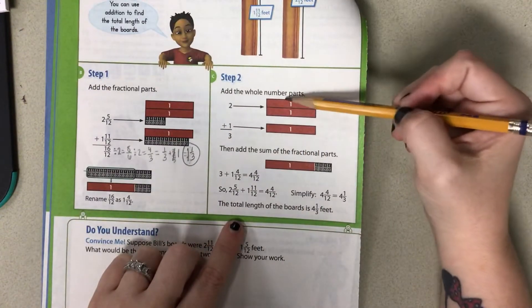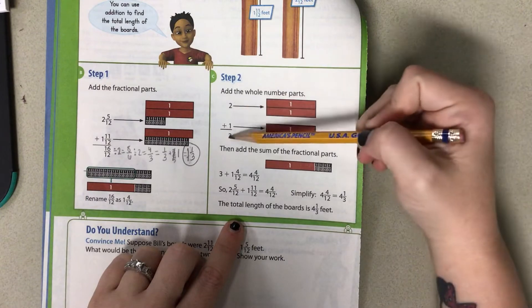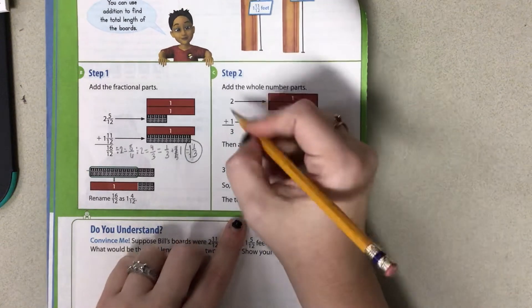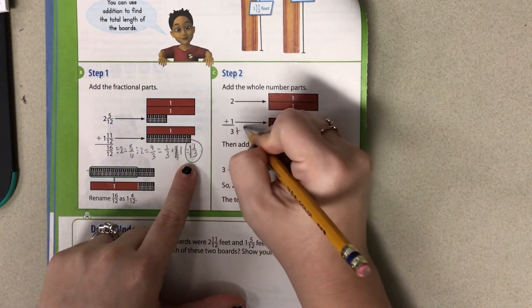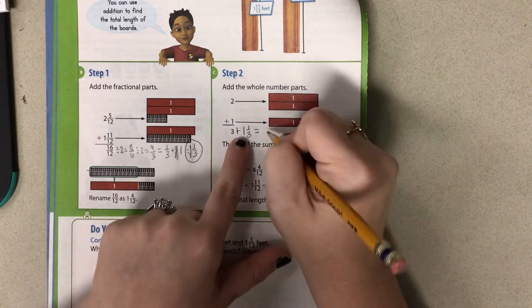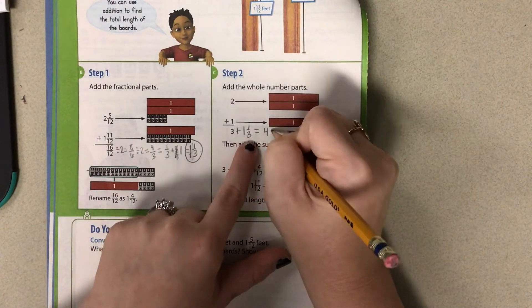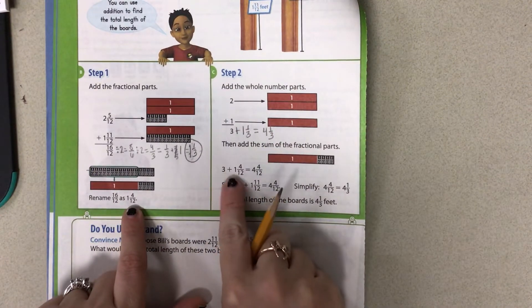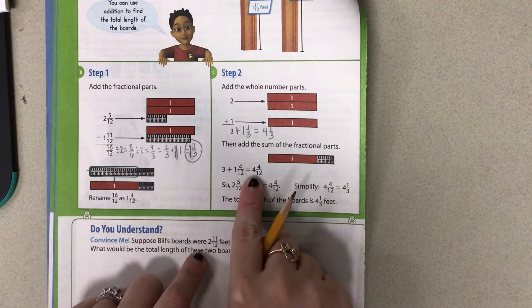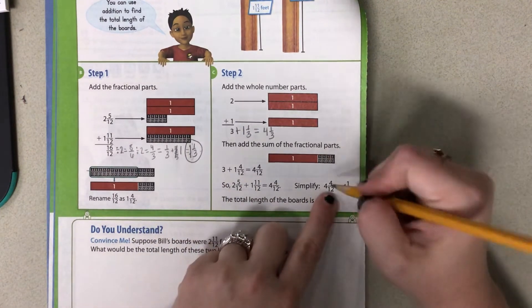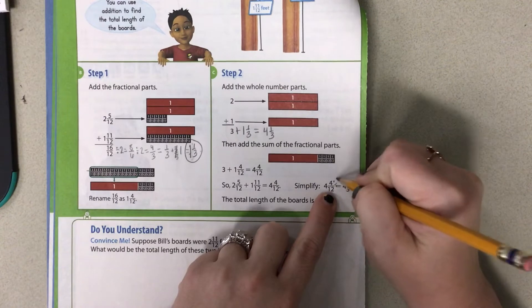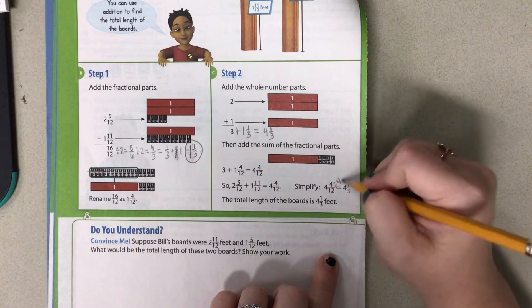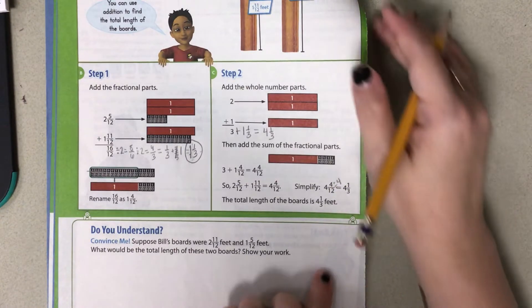So now we can add the whole number parts, which is going to be 2 wholes plus 1 whole, which is 3 wholes. But now we have to add both pieces together. So now we have 1 and 1 third plus 3. And 3 wholes plus 1 whole is 4. And then you still have your third left over. They kept this part again. So they did 3 plus 1 and 4 twelfths, which gave them 4 and 1 twelfth. Then they had to simplify. So here is where they went and divided both sides by 4 and got 4 and 1 third. When you're dividing to make your fraction smaller, you don't mess with that whole number. The whole number stays the same.